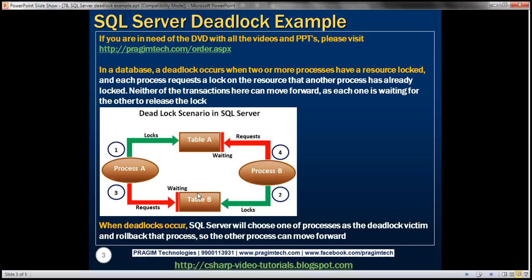The diagram here explains the scenario. We've got two resources here, Table A and Table B, and two processes, Process A and Process B. Both these processes want to update both these resources, Table A and Table B. So Process A starts first and it starts updating Table A. Since no other process has already acquired an exclusive lock on Table A, Process A is allowed to acquire an exclusive lock on that table.